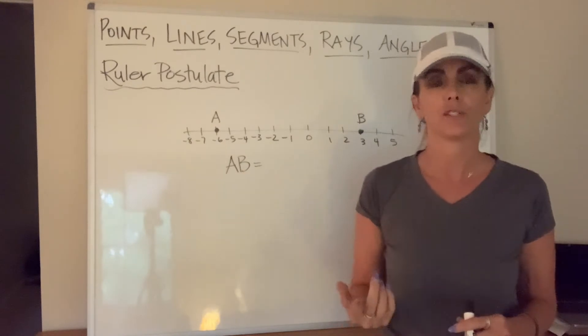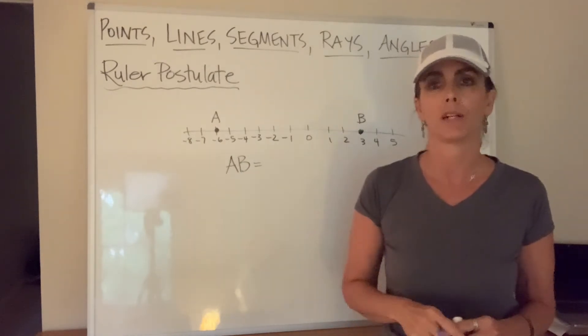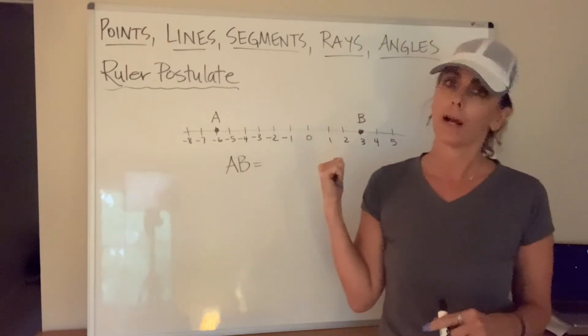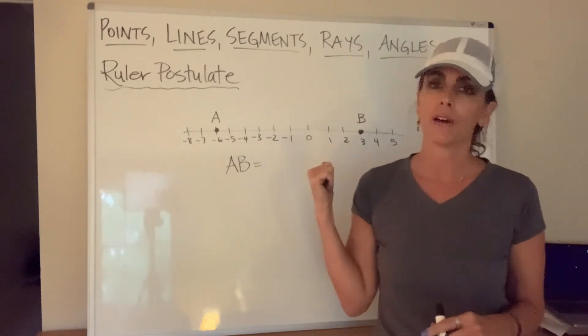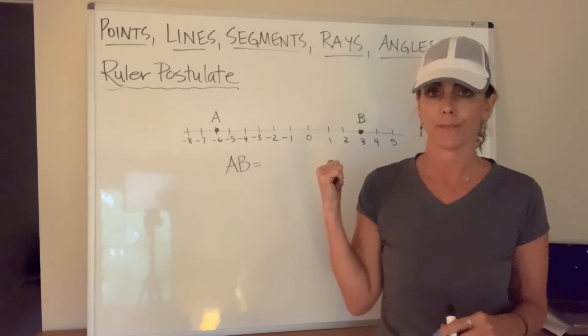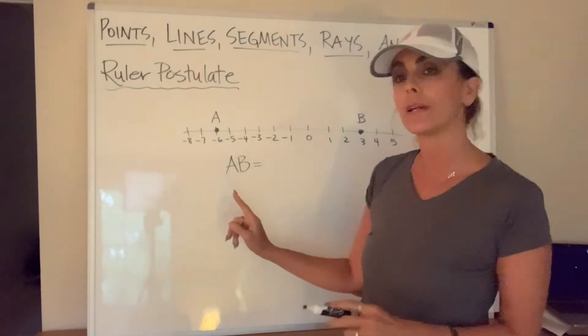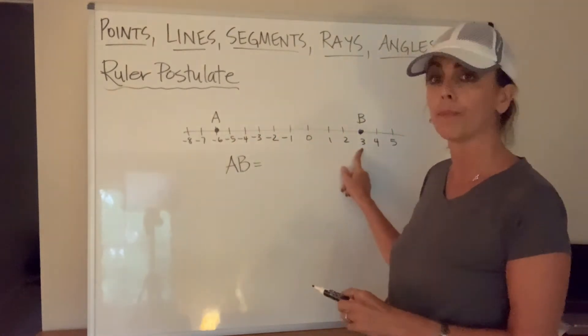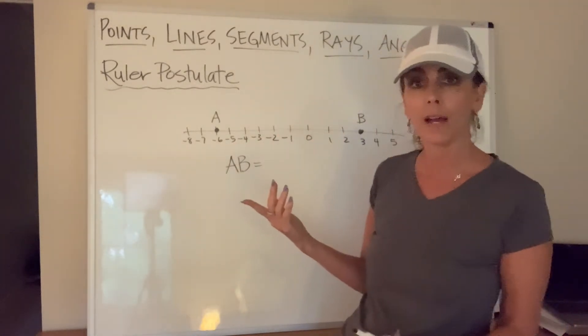Okay, here's a real application of using the ruler postulate. Let's put a couple of coordinates A and B on the number line and we want to find the distance between them. Okay, so I can just take the coordinate associated with A and subtract the coordinate associated with B and then take the absolute value.